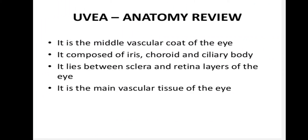Let's see what is the uvea. It is the middle vascular coat of the eye — the vascular middle layer contributing to blood supply to the retina. It is composed of the iris, choroid, and ciliary bodies.